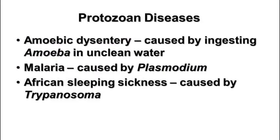There are a number of diseases caused by protozoa. An example is amoebic dysentery, caused by ingesting amoeba in unclean water — it's a vomiting and diarrhea kind of disease, very unpleasant. Malaria is a disease caused by plasmodium and is carried by the mosquito. African sleeping sickness is another one caused by a protozoan called trypanosoma and is transmitted by the tsetse fly.